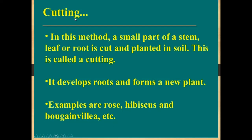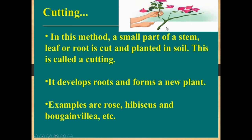The next method is cutting. In this method, a small part of the stem, a leaf, or a root is cut and planted in soil, and it develops into a new plant. Examples: rose, hibiscus and bougainvillea can be produced by this cutting method.